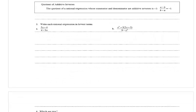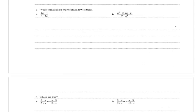In number 3, it asks us to write each rational expression in lowest terms. In A, we have 5x minus 4 divided by 4 minus 5x. These are additive inverses — 5x is positive in the numerator and negative in the denominator, and 4 is negative in the numerator and positive in the denominator. Because they are additive inverses, the answer is negative 1.